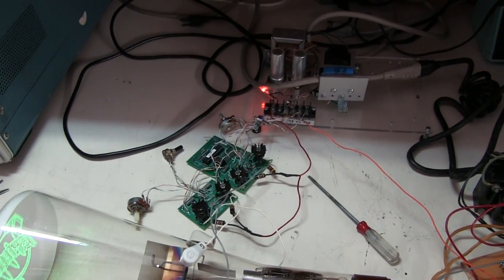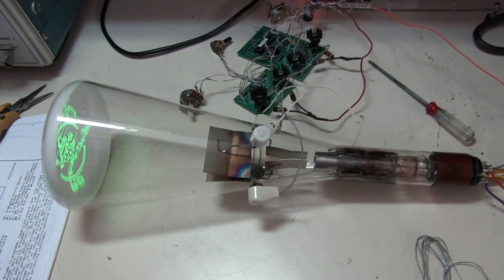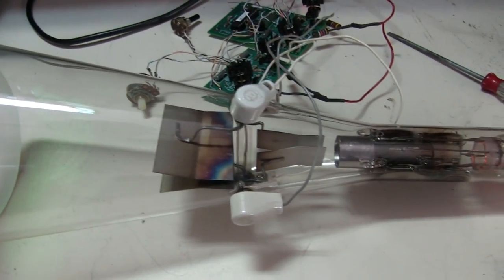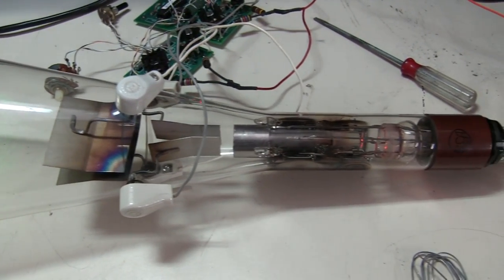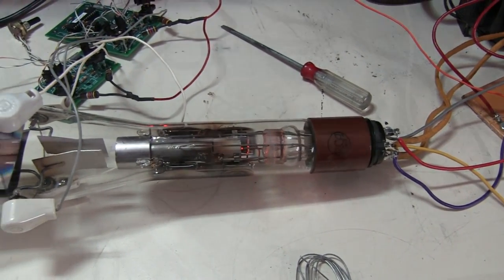Another view of the setup. That supply up above supplies 300 volts for the deflection and plus/minus 12 volts also for the deflection amplifier, and 5 volts for the little microprocessor that's actually driving to produce the images.